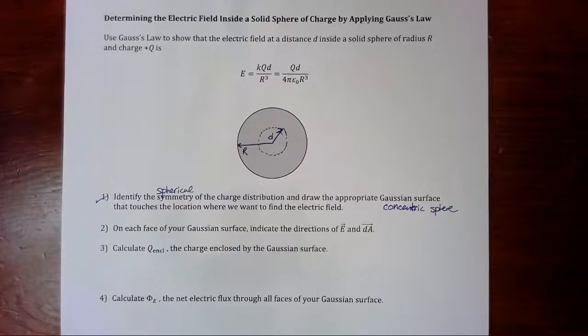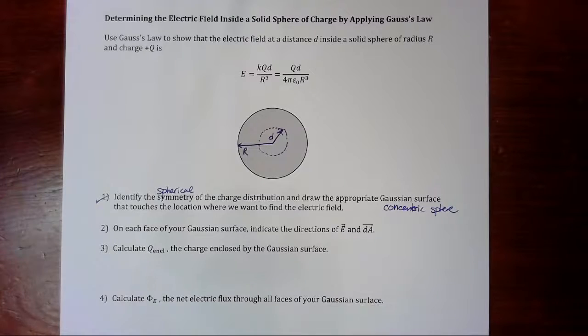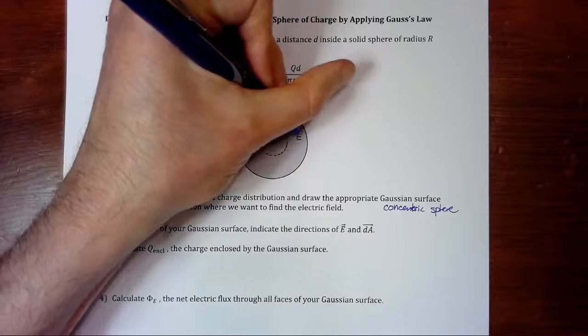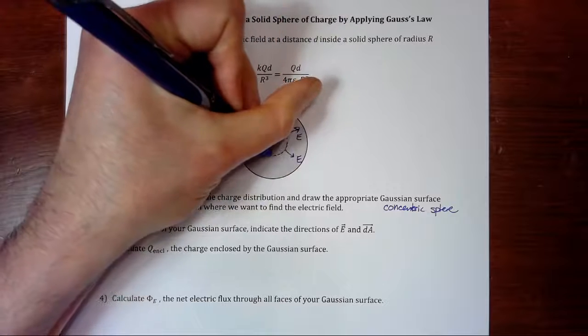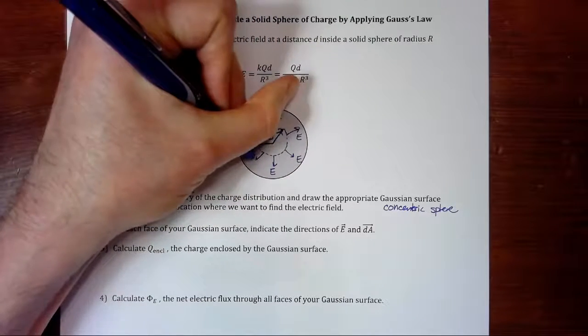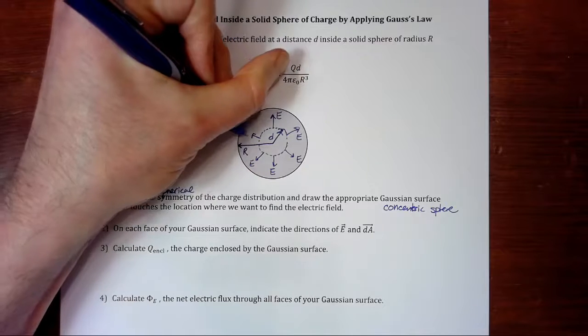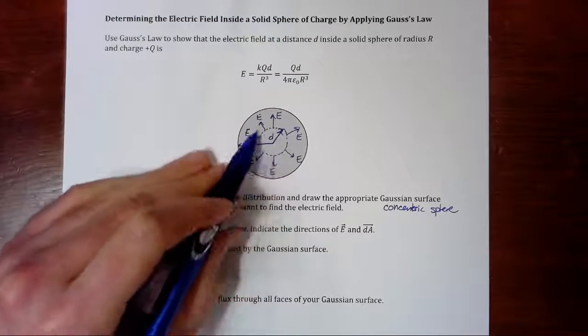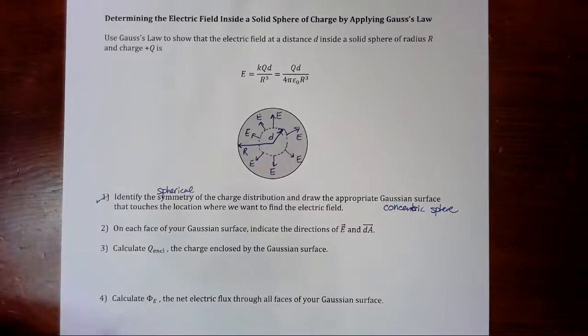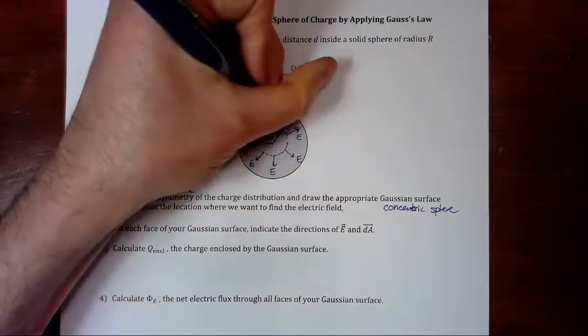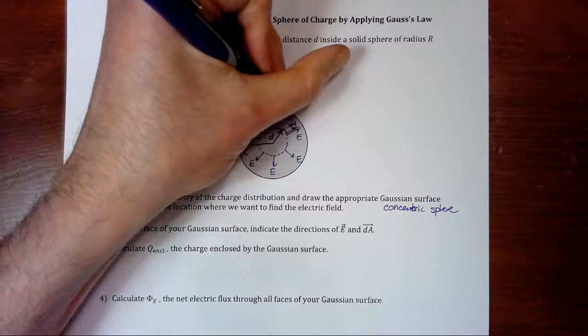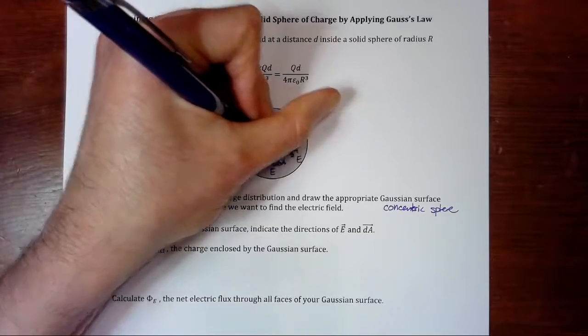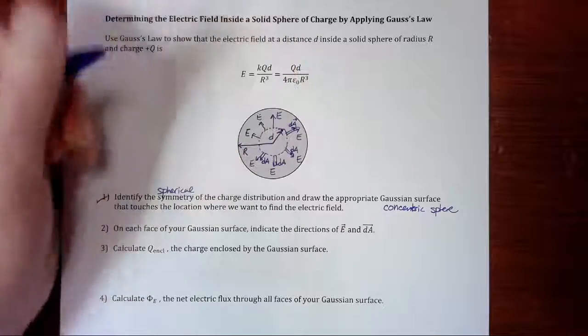On the face of your Gaussian surface, indicate the directions of E and dA. Well, E is outwards everywhere. And since we have spherical symmetry, that means that the strength of the electric field is going to be the same everywhere along the surface of this imaginary sphere that is inside our charge. And the dA vectors are also going to be pointing outwards, and they are going to be parallel to the E vectors.